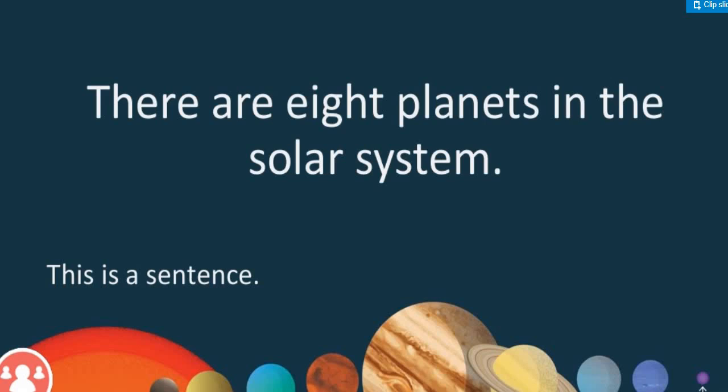If you look at here — 'There are 8 planets in the solar system.' We can say that this is a sentence. Why? Because number one, it is grammatically correct. Number two, it has a meaning — I understand what the sentence is talking about. And of course, the punctuation is written correctly. There is a subject and there is a verb.